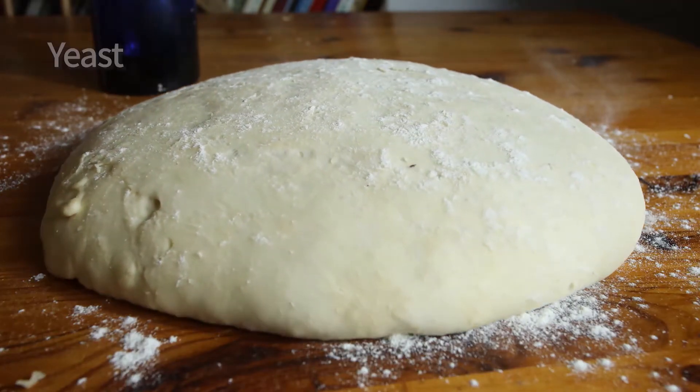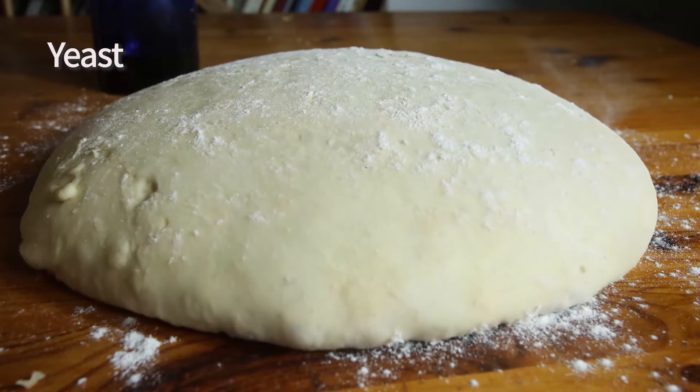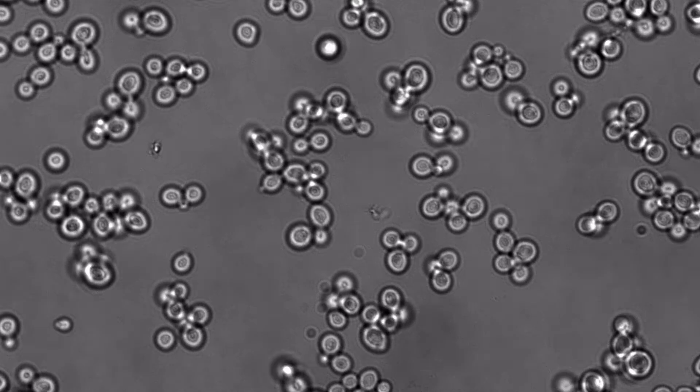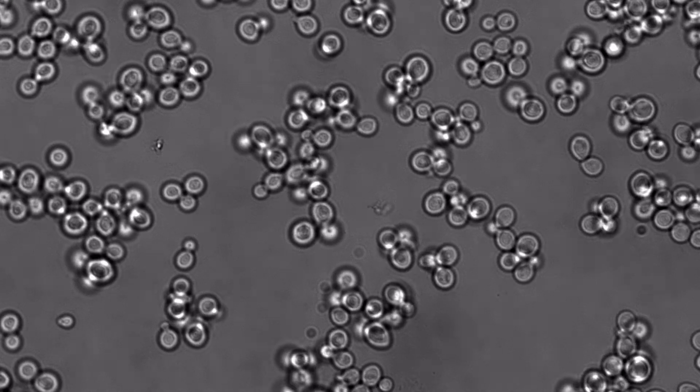In some sexually reproducing unicellular organisms like yeast, the haploid cells do not undergo any significant differentiation in addition to meiosis. In these organisms, the gametes are identical in shape and size, and there are no males or females.